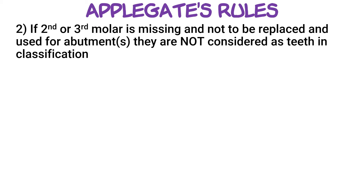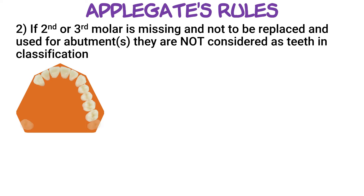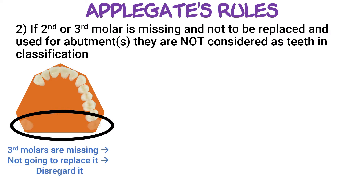Rule number 2 states that if the second or third molar is missing and is not to be replaced or used as an abutment, then they will not be considered in the classification. In this arch, our third molars are missing, and if we don't have any plans to replace them, we're going to disregard them from the Kennedy classification and treat them as missing teeth. Thus, this is a single unilateral edentulous base posterior to the remaining teeth — a Class 2 classification.